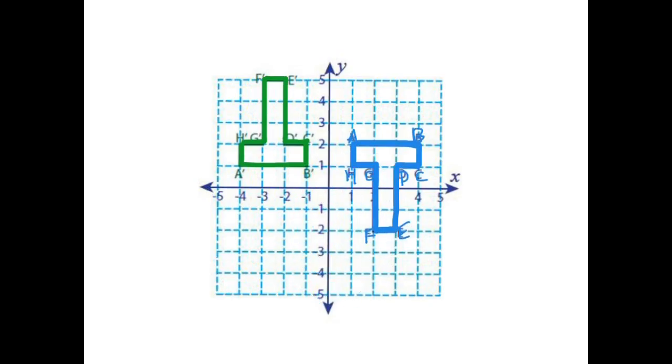All right, here's the real one. You translate it. You go down and over and then you reflect it. And when you reflect it, it'll go right here. And now the F and the E are on top of each other. So the answer is translate and then reflect.